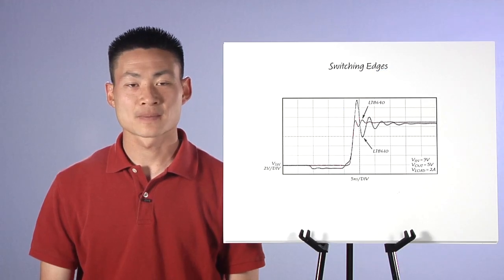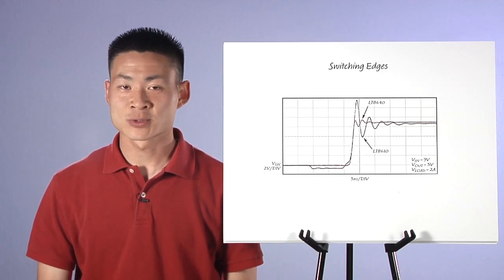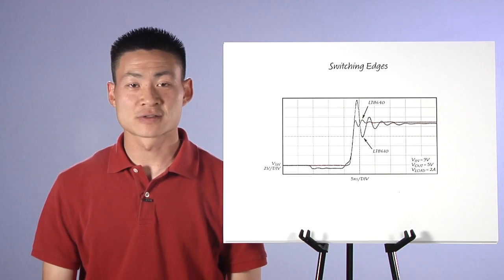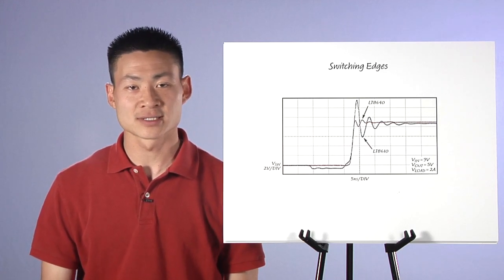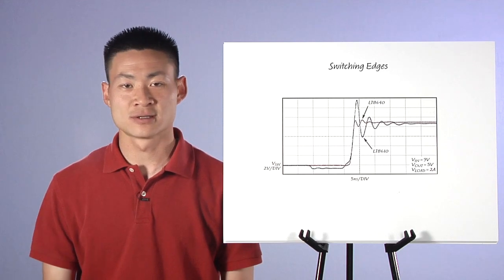Let's look at the switching edges. One benefit of the silent switcher architecture is that it ensures fast switching edges for good efficiency, yet still achieves minimal ringing on the switch node.